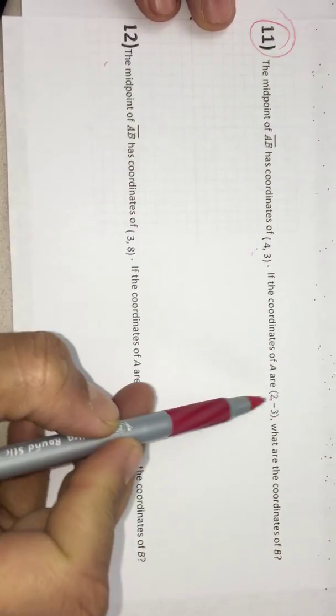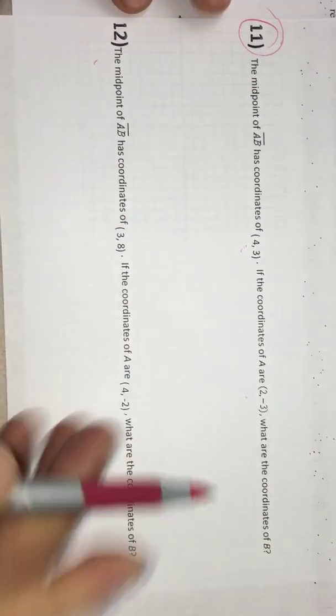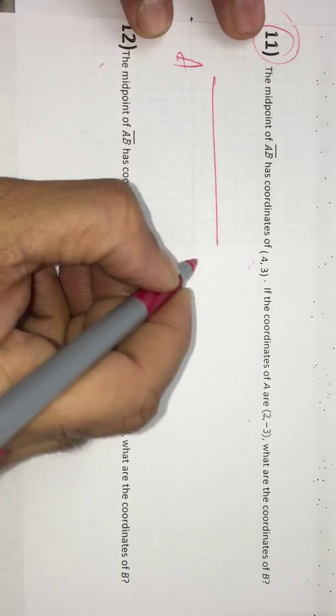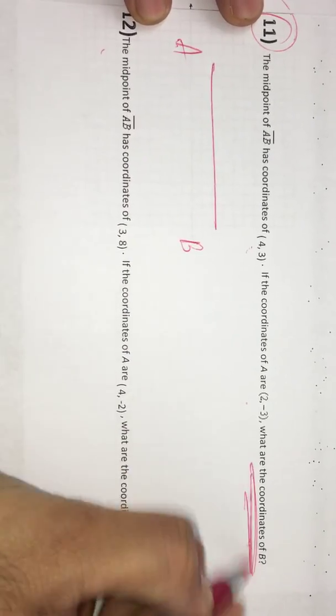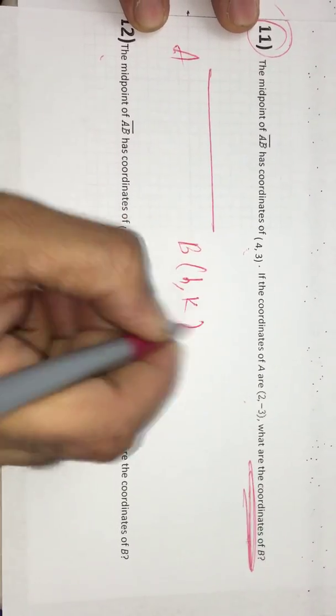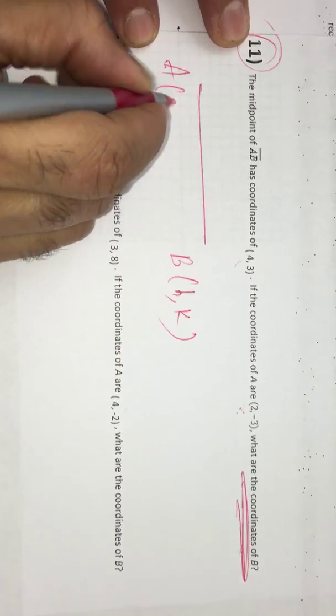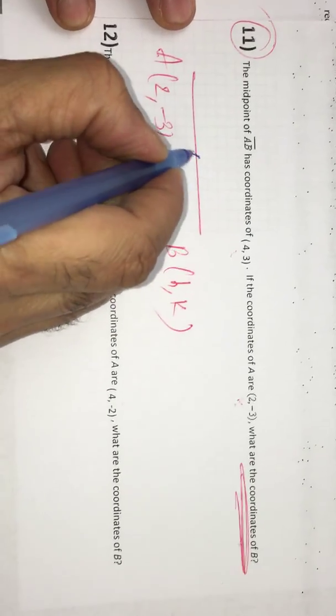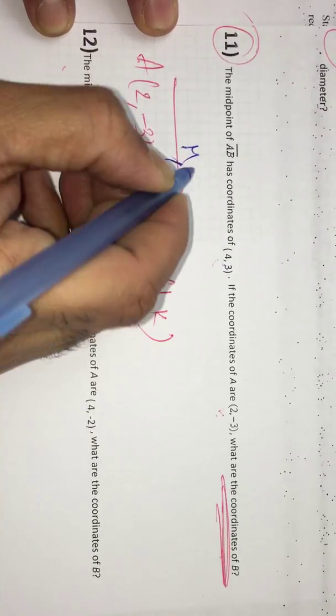The last model, 11th and 12th are the same type. I do 11th. Midpoint coordinates are given and A coordinates are given. What about B? If you draw the line like this, A, this is B. We do not know the coordinates of B. When you do not know, write H, K. The coordinates of A are 2, negative 3. Then the midpoint M is 4, 3, which is already given.